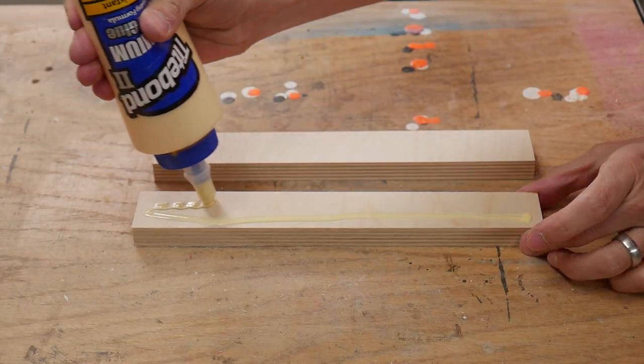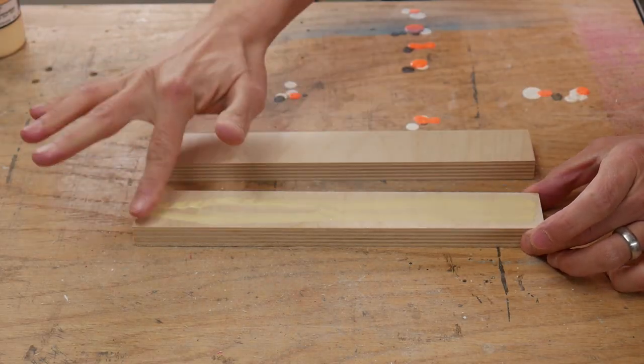While the glue was drying, I glued the other two pieces of plywood together face to face.